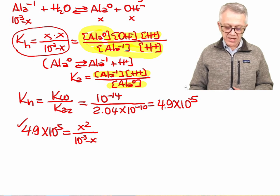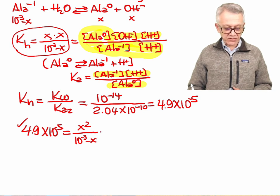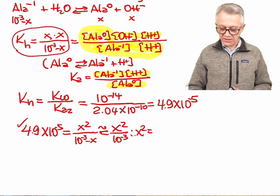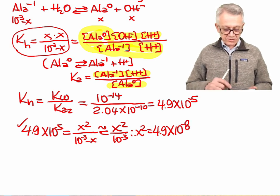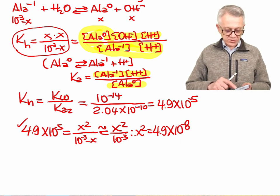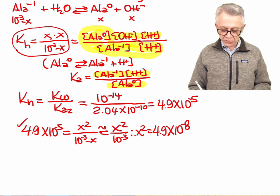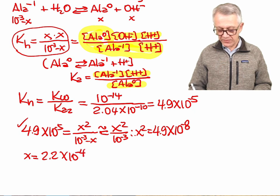For this case here, the Ka or Kh in this case is small, so this x can be neglected for this particular case. Then we would have here as an approximation x squared divided by 10 to the power of negative 3. From here we can multiply this by that one, it's going to be 4.9 times 10 to the power of negative 8. And take the square root of that, it's going to give us 2.2 times 10 to the power of negative 4.